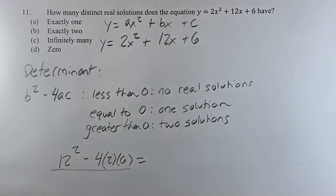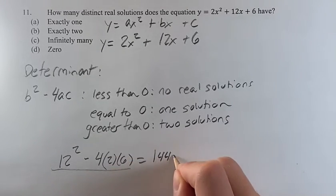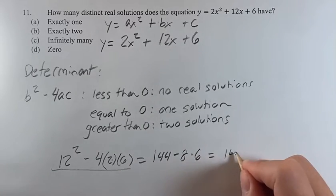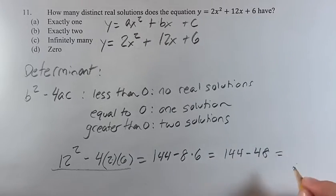And we just have to calculate this and see what it is in relation to 0. So 12 squared is 144, minus 4 times 2 is 8, times 6. If you calculate that, it's 144, minus 8 times 6, which is 48, which is 96, which is greater than 0.